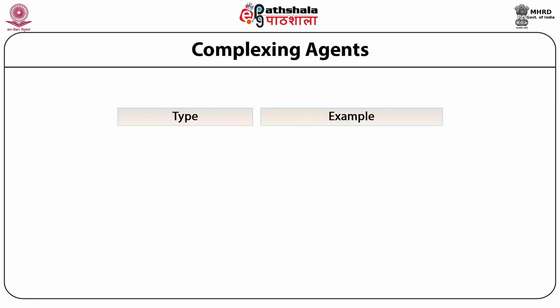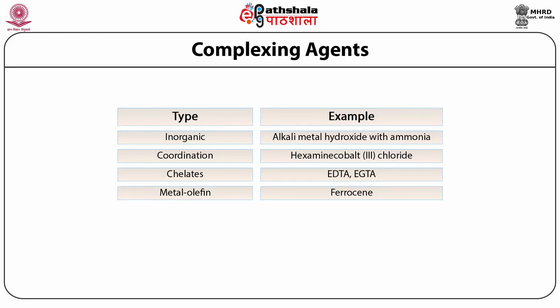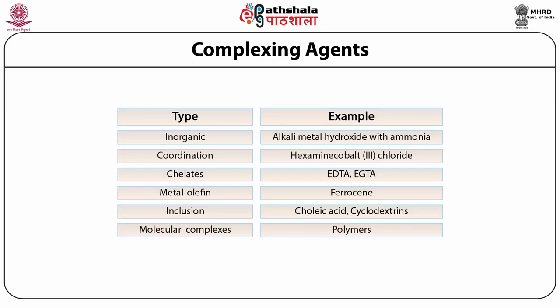Various examples of complexing agents according to their categories: inorganic type — alkali metal hydroxides with ammonia; coordination complexation type — hexamine cobalt-3 chloride; chelates — EDTA and EGTA; metal olefins — ferrocene; inclusion type — cholic acid and cyclodextrin; and molecular complexes — polymers.